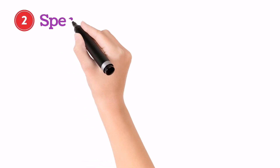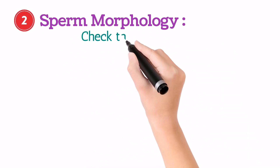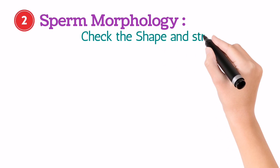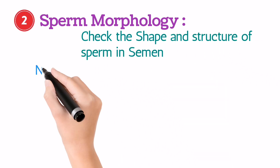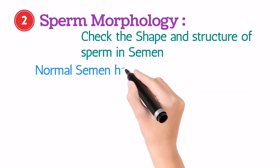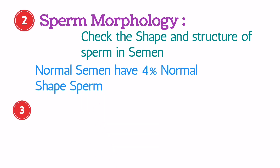Second, sperm morphology. In this part of the analysis, you should focus on sperm shape and structure. The normal semen will have at least 4% normal shape sperm.